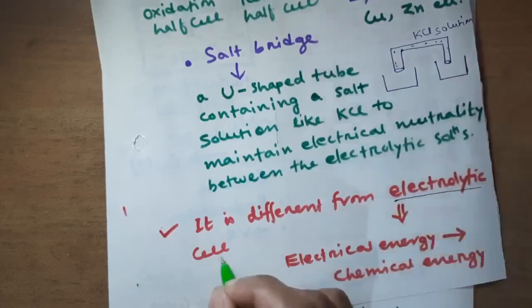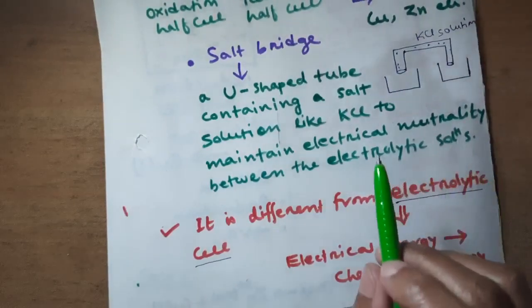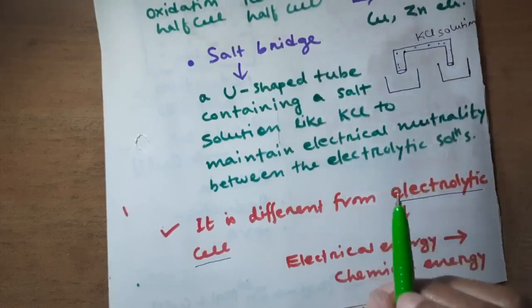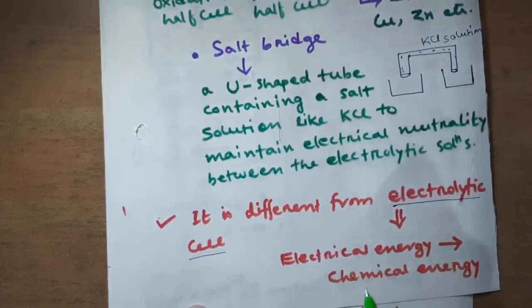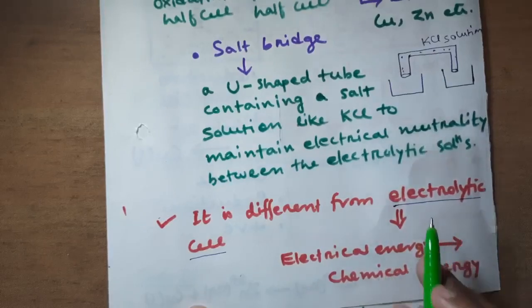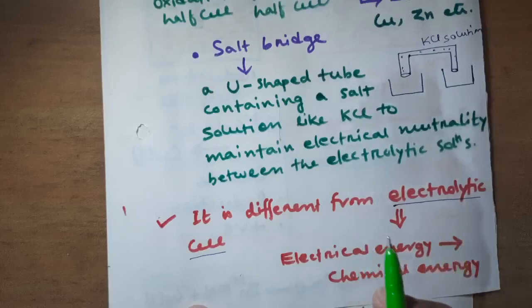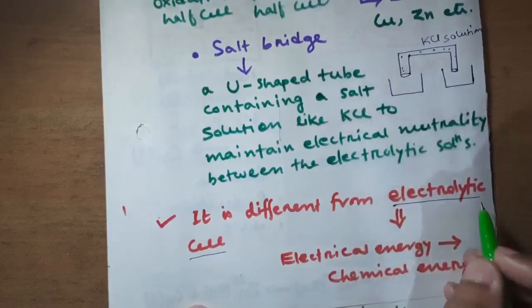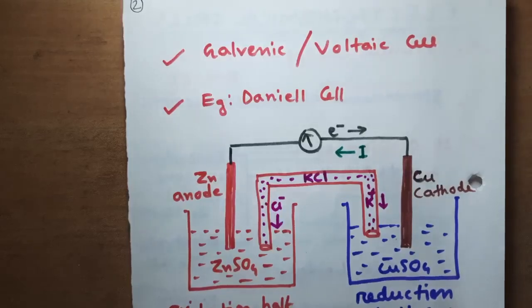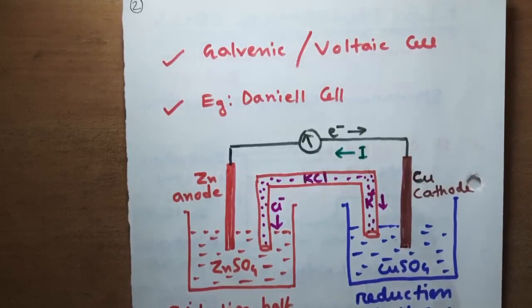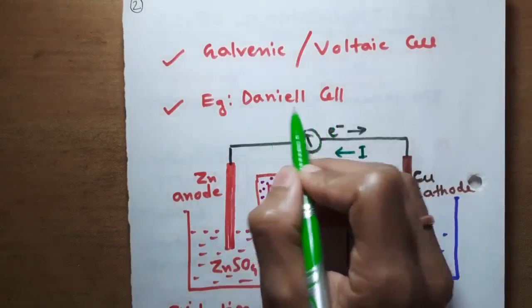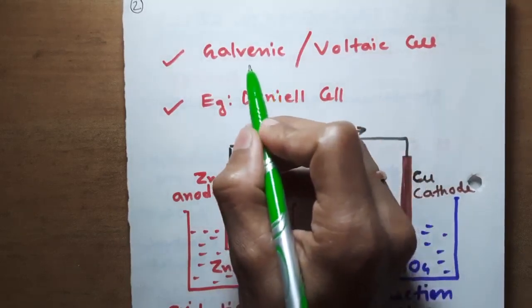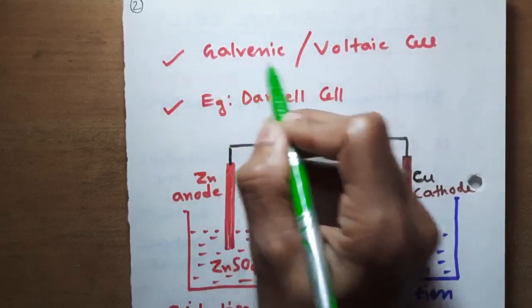Don't confuse electrochemical cell with electrolytic cell — they are completely different. An electrolytic cell converts electrical energy to chemical energy, whereas an electrochemical cell converts chemical energy to electrical energy. In this video we will only consider electrochemical cells. Electrochemical cells are also known as galvanic or voltaic cells.